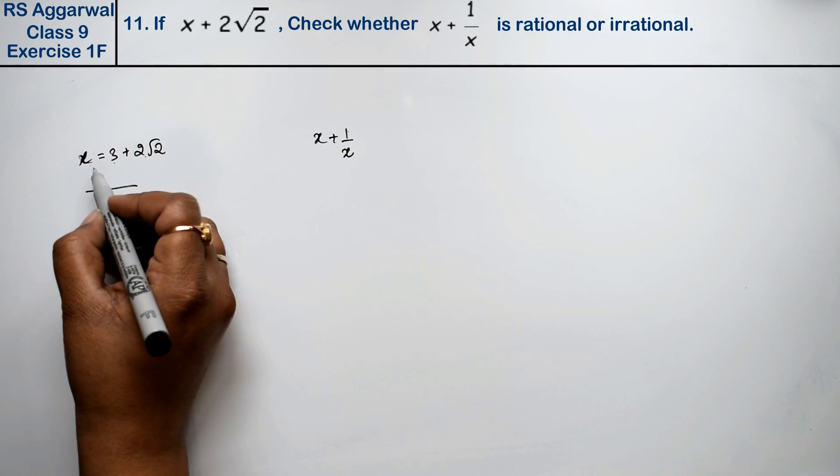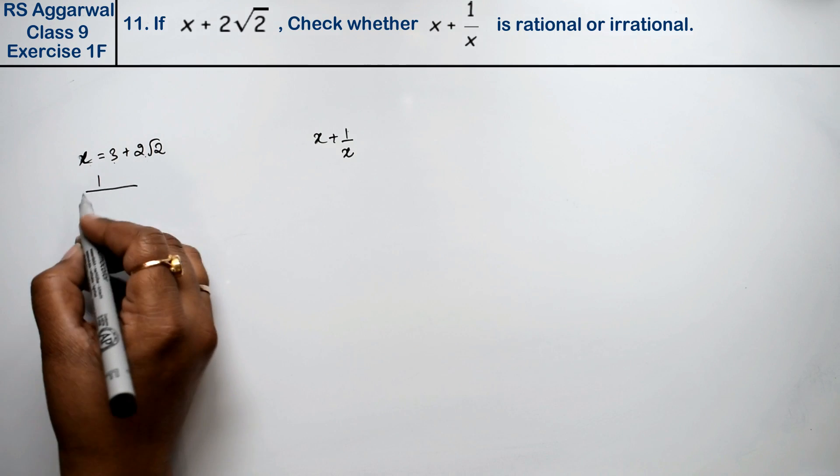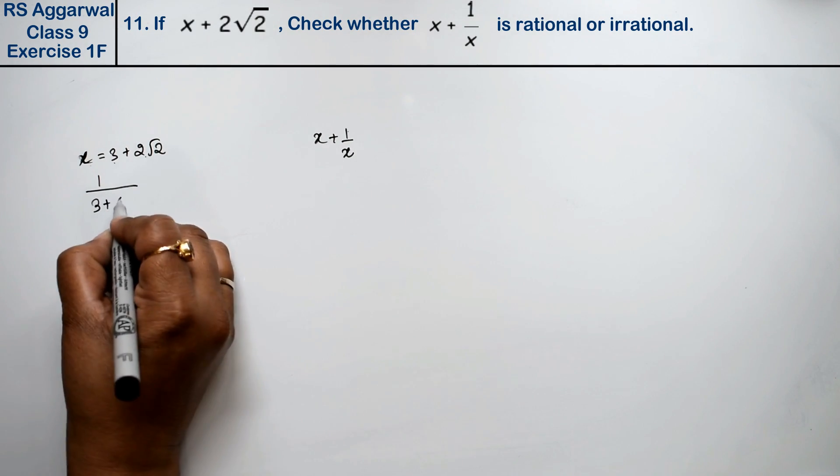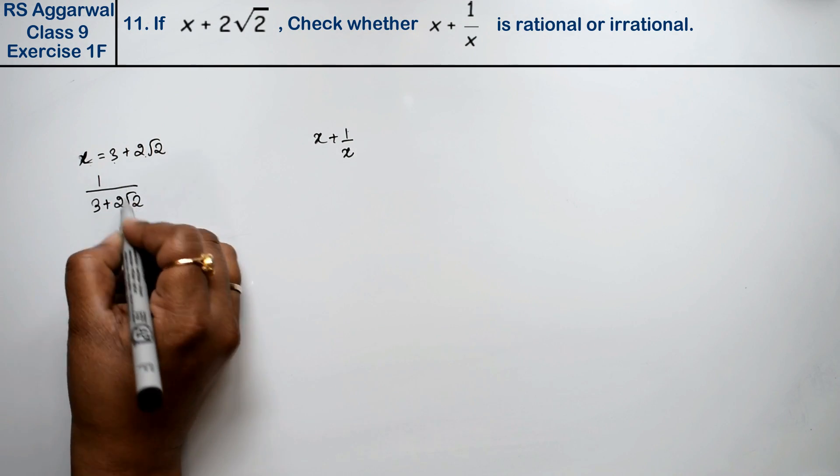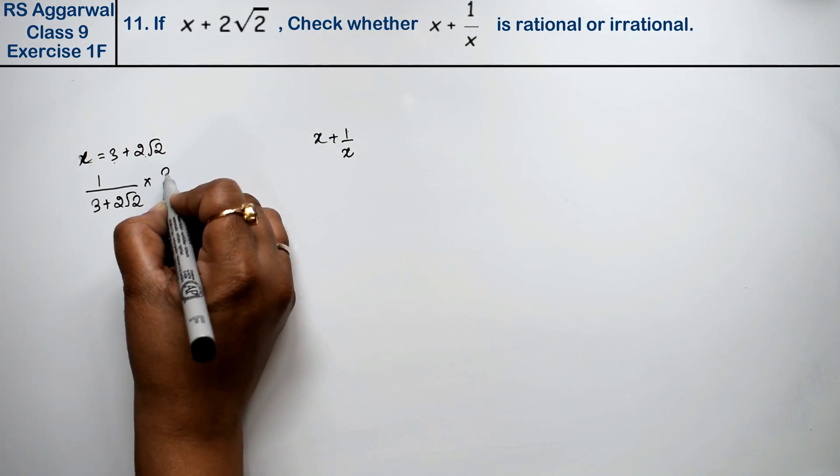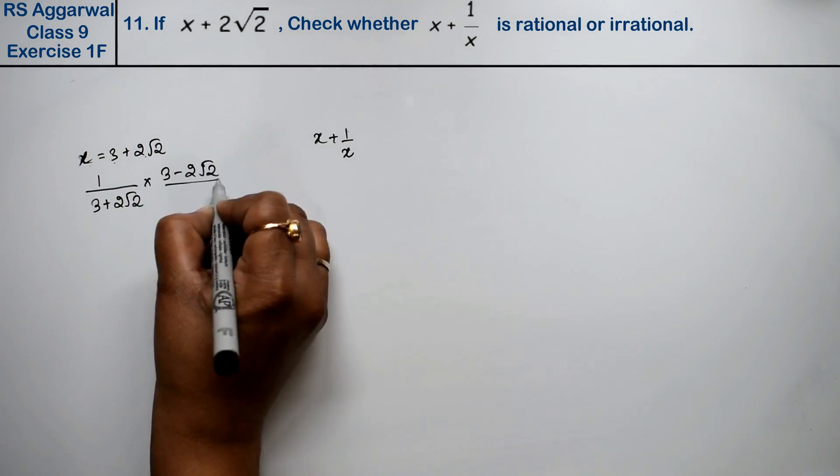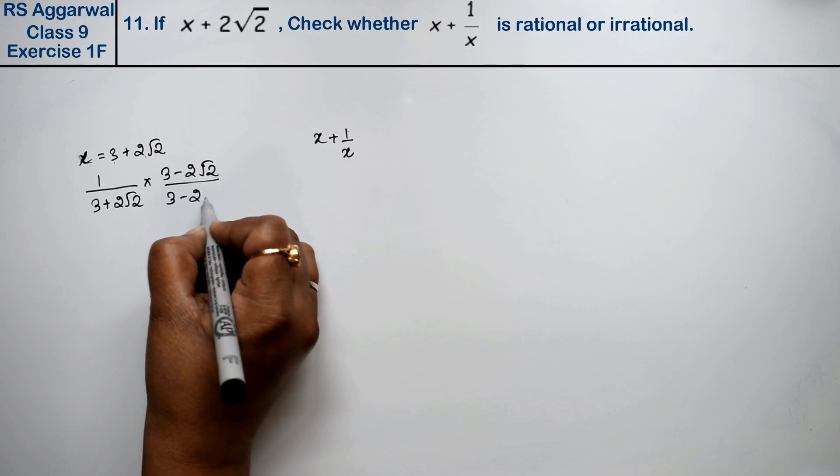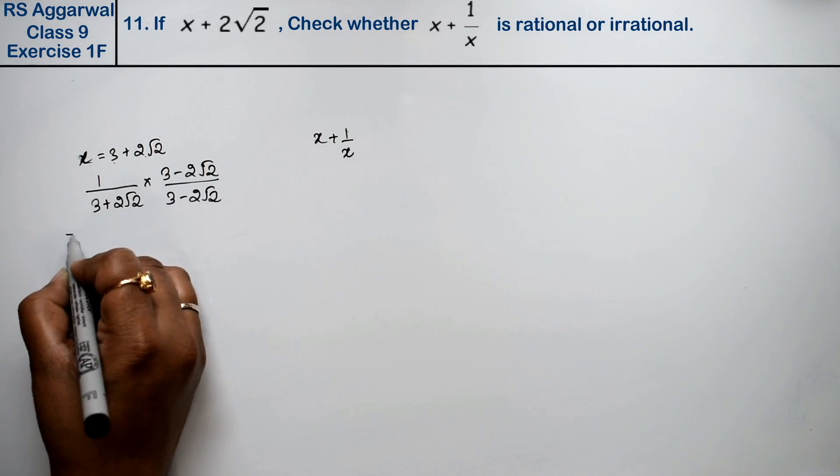Now we have 1 upon x value, so 1 upon x value is 1 over 3 plus 2 root 2. Now it is upon, so we will rationalize it: multiply by 3 minus 2 root 2 upon 3 minus 2 root 2.